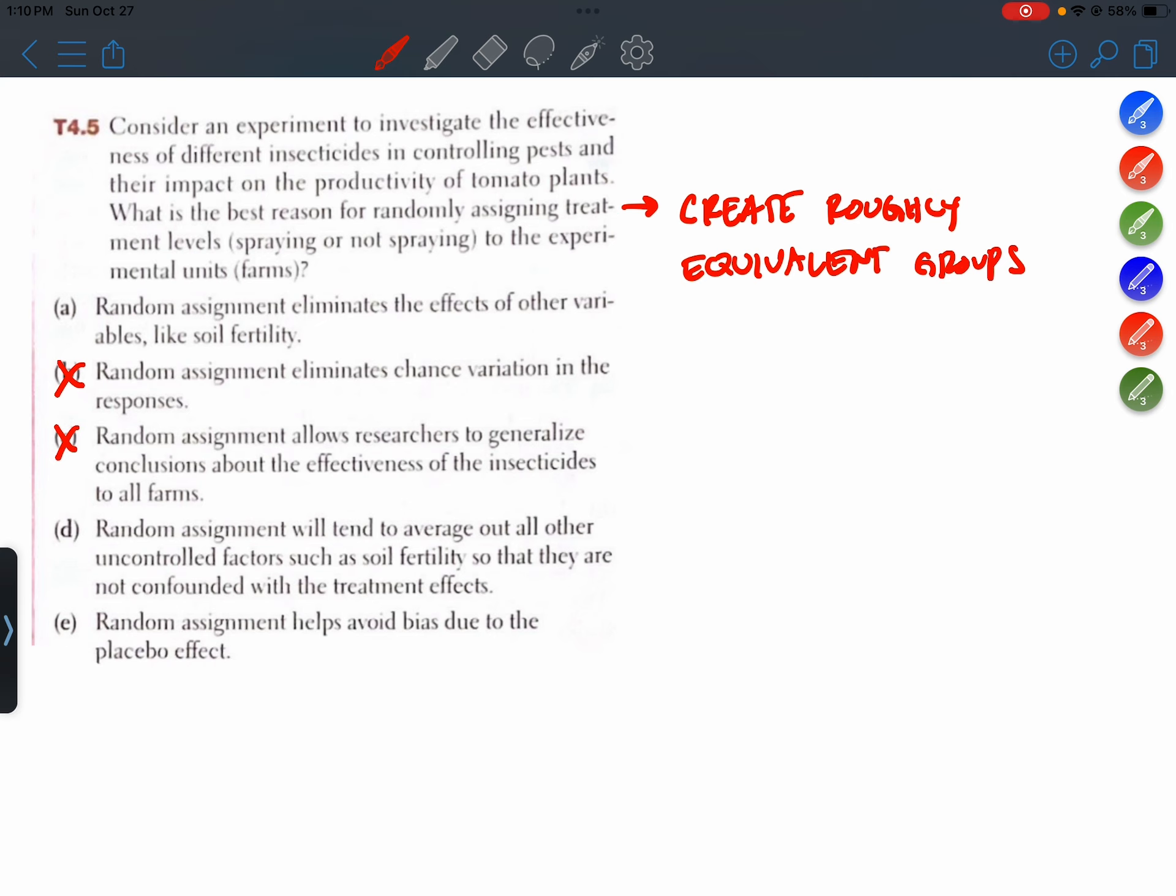Choice E: Random assignment helps avoid bias due to the placebo effect. Well, the placebo effect, I don't know how that applies to farms. Usually the placebo effect is a psychological effect that happens when your subjects are humans. I don't see how that applies here.